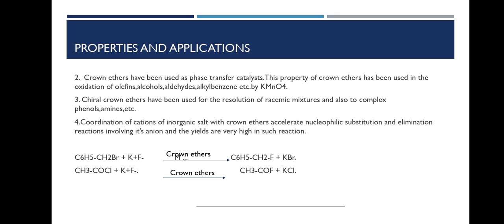This maintains homogeneity between the aqueous and organic phases. These phase transfer catalysts are used in the oxidation of olefins, alcohols, aldehydes, alkylbenzene, etc. by potassium permanganate, and this is also an important property of crown ethers.